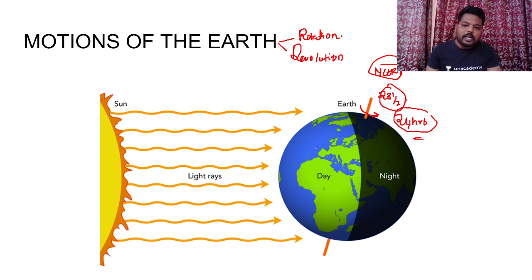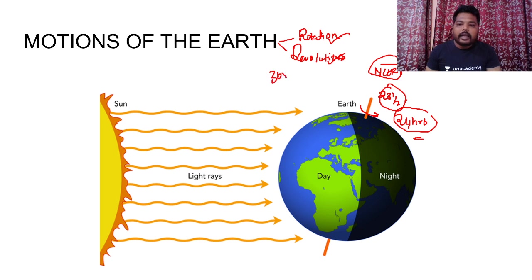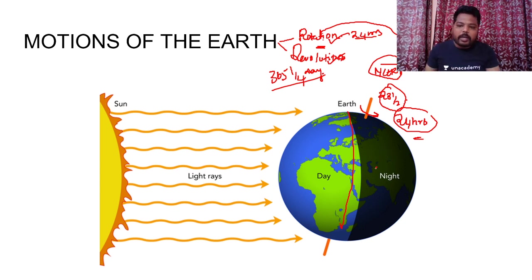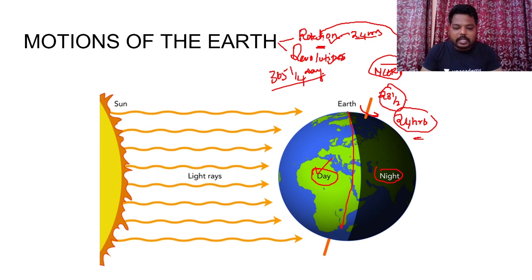Because of rotation, when the earth rotates, half of the portion faces the sun and experiences day, while the other half faces away and experiences night. It is the eastern hemisphere which gets sunrise first. So because of this rotation we experience day and night — please remember this particular point.